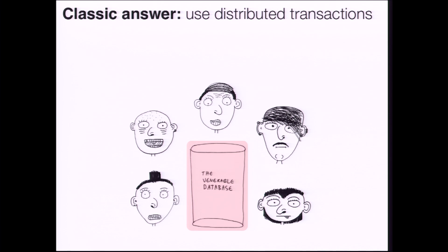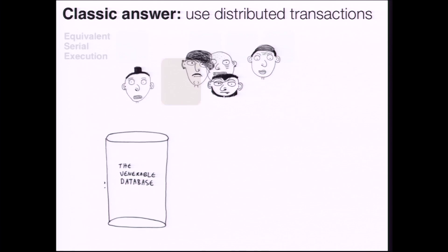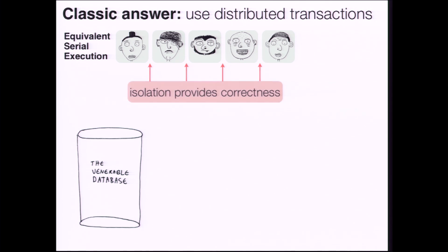The classic answer is to use what I'll call distributed transactions. We'll essentially take each of these users' queries and run them essentially one after the other such that they're isolated from one another. By isolating users, we provide correctness, and this works really well on a single-site database system.